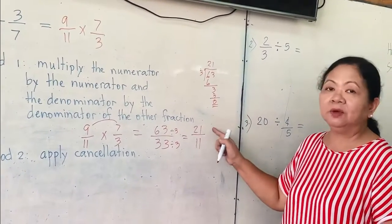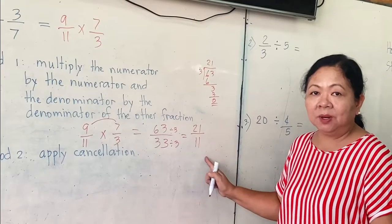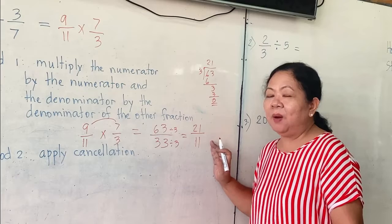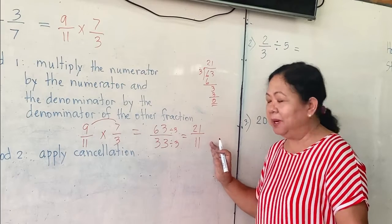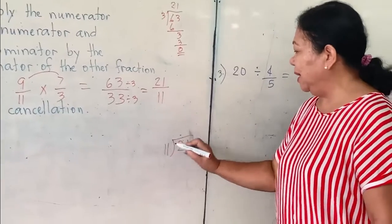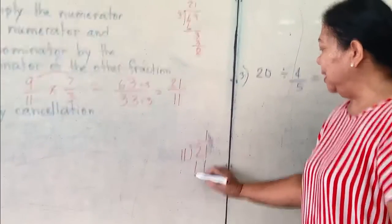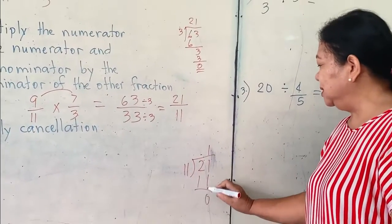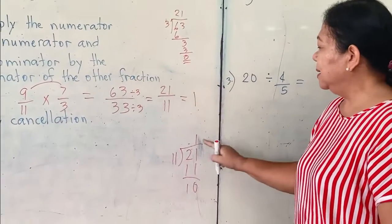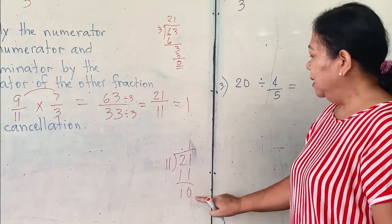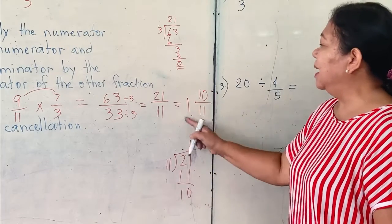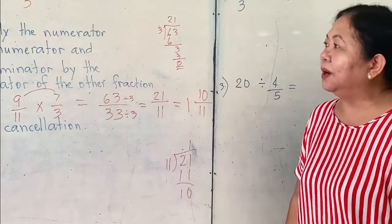But the problem is the numerator is bigger than the denominator. We can divide the numerator by the denominator, and our answer will be a mixed number. Look here: twenty-one divided by eleven. So this is one. One times eleven is eleven. Two minus one is one. Therefore, the answer here is one — this one is the whole number, this is the numerator, and this is the denominator. The answer is one and ten over eleven.